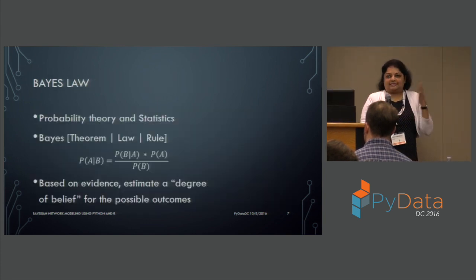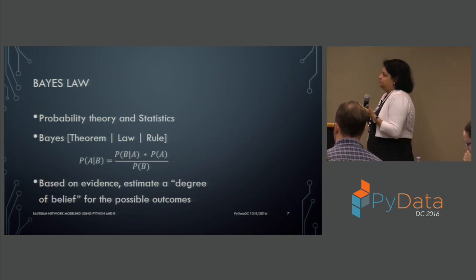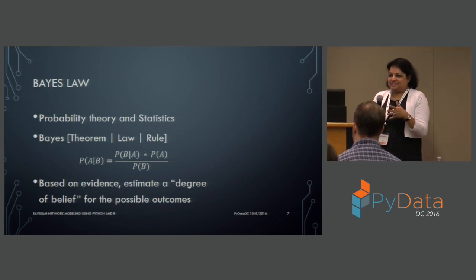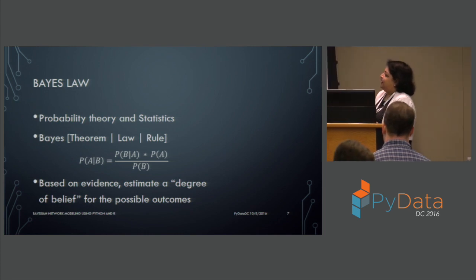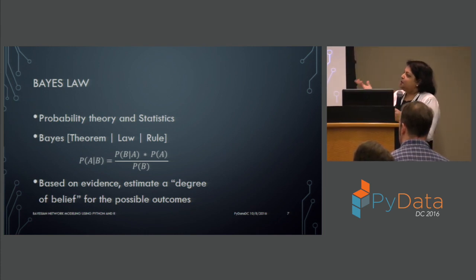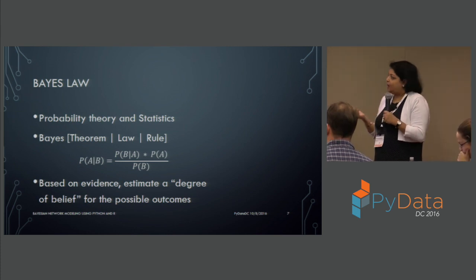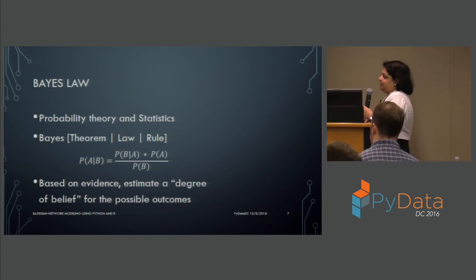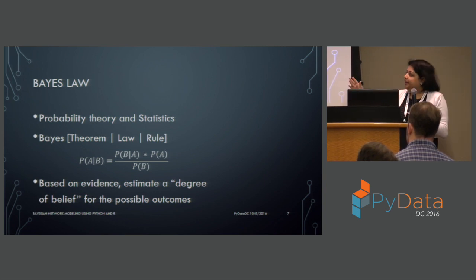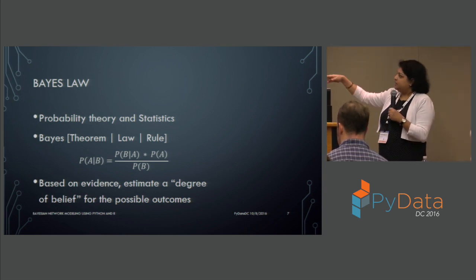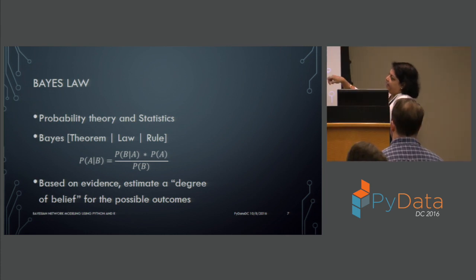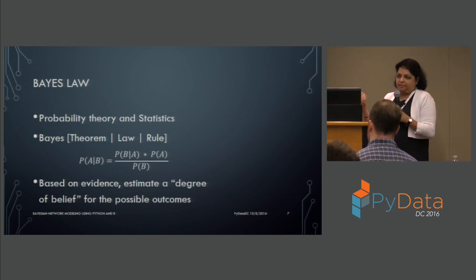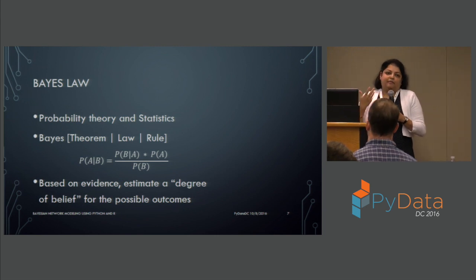Let's start from the beginning with Bayes' law. I know equations can get a little scary, so just hold on — there are very few equations in this presentation. Bayes' theorem, also known as Bayes' law or Bayes' rule — they are interchangeable and represent the same thing. What it gives you is the probability of A given B, written as P(A|B): what is the probability of A occurring given that B has already occurred? You have information about B — how do you leverage that to have a better understanding of A?